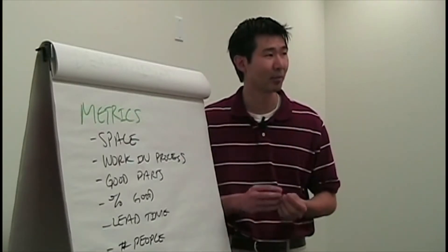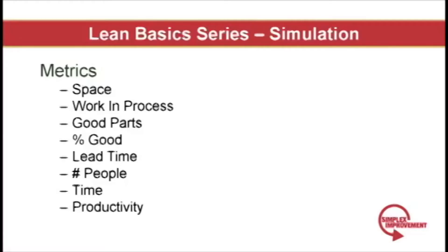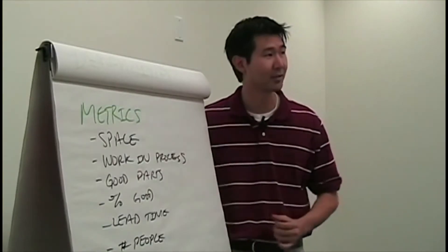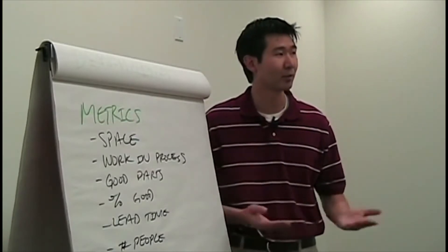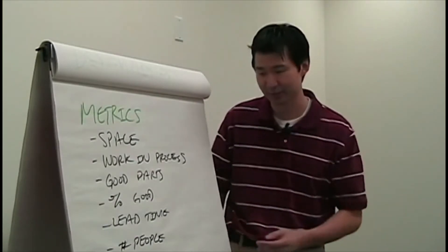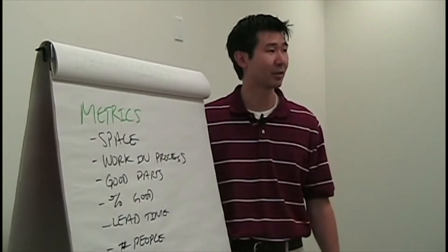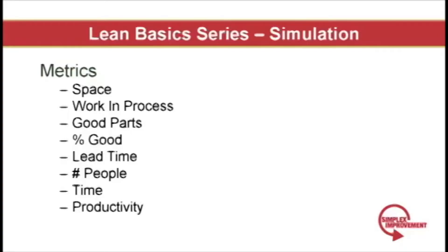Work in process is how many planes are partially built at the end of the five minutes. Next is good parts — how many of those that are fully complete do I as a customer consider done correctly? Next, we have percentage of good, which is the number done correctly divided by the total number of planes considered finished. Then we have lead time, which is the X-Plane I mentioned earlier — how long did it take to build a plane from start to finish once I inserted an X-Plane into the system?